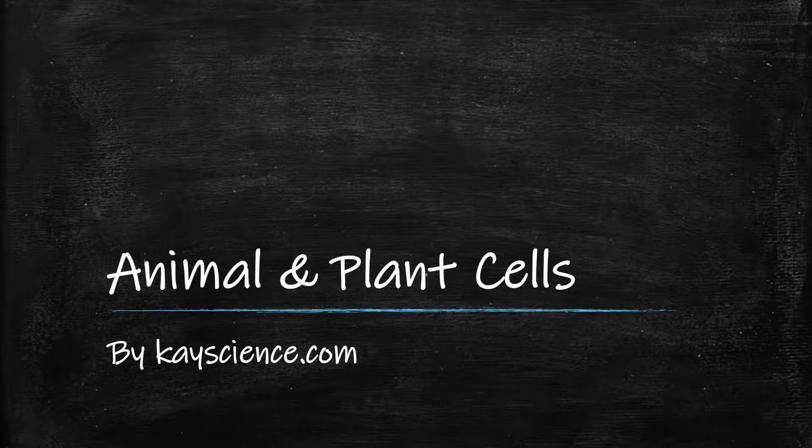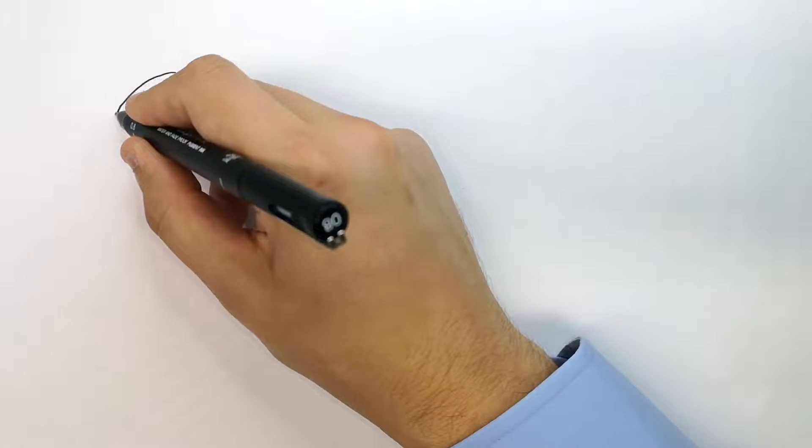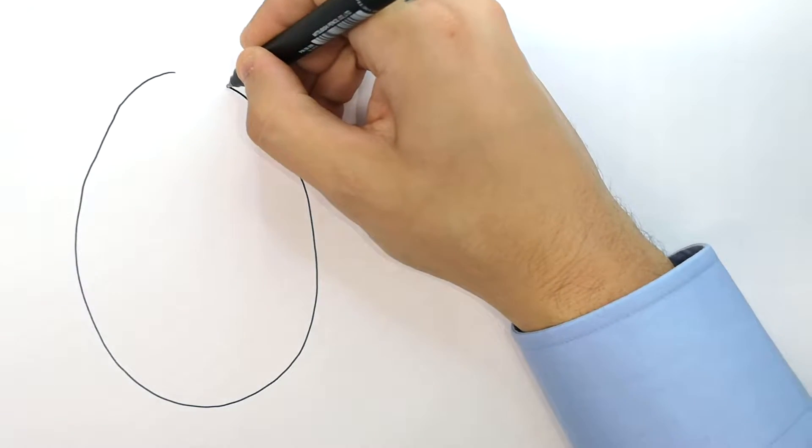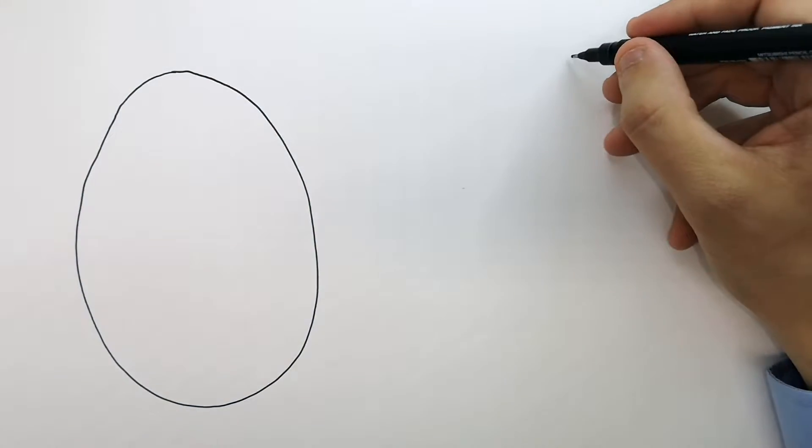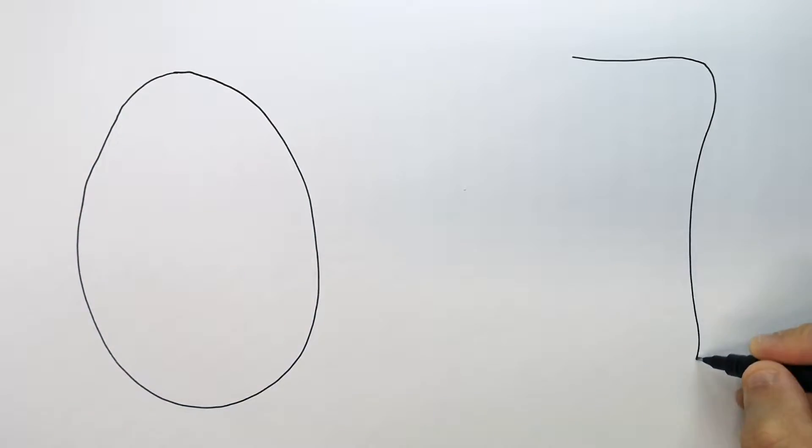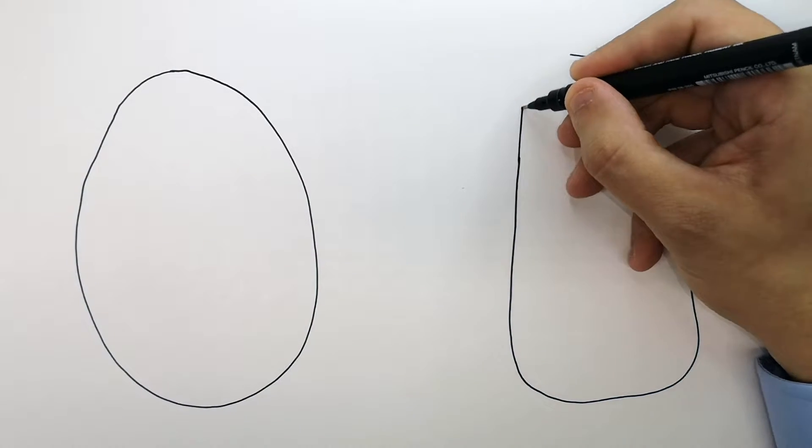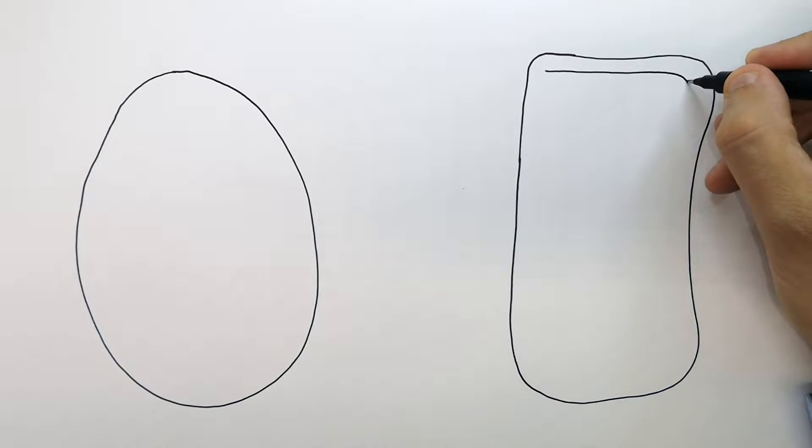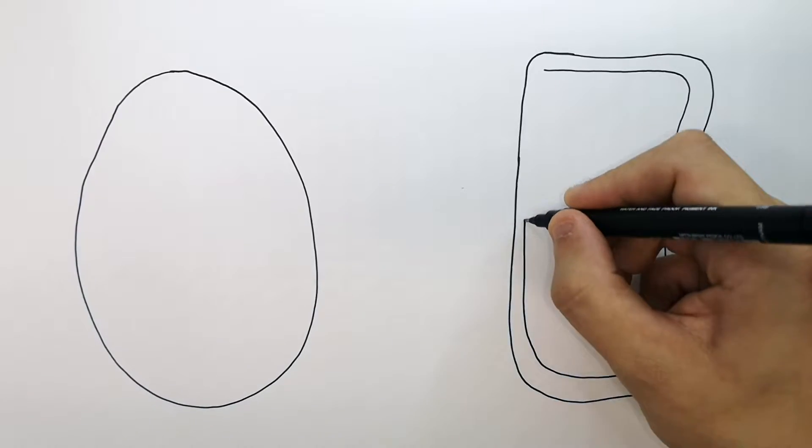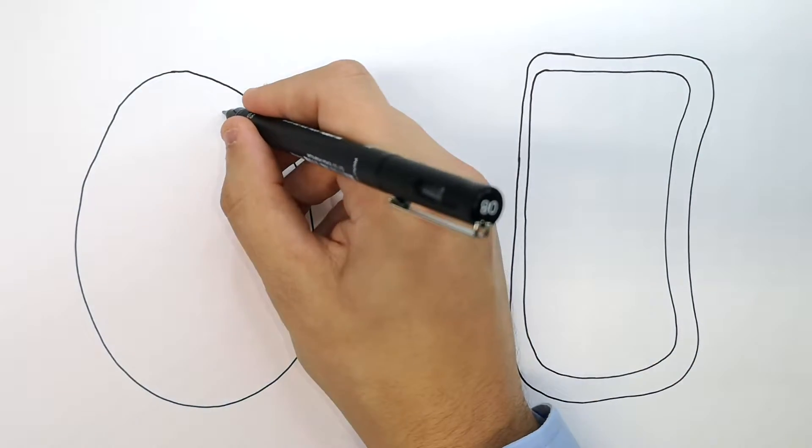Animal and plant cells by kscience.com. This video is going to compare the structure of an animal and a plant cell. On the left hand side is the animal cell without a cell wall, and on the right hand side is the plant cell with a cell wall and a cell membrane.